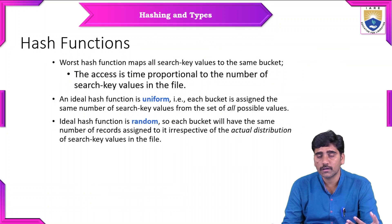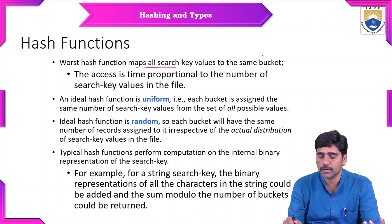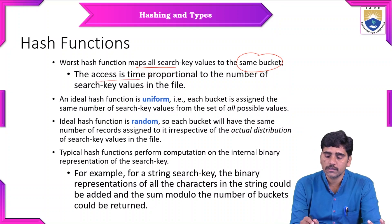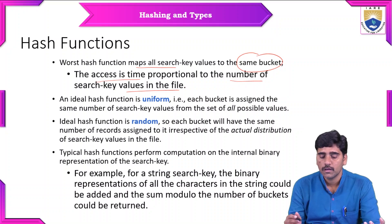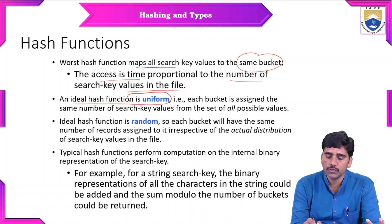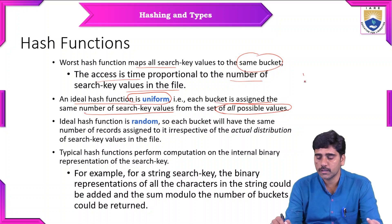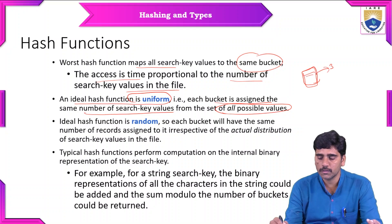There are different types of hash functions. In the worst case, all search key values are mapped to the same bucket, making access time proportional to the number of search key values in the file. An ideal hash function is uniform — each bucket is assigned the same number of search key values from the set of all possible values.